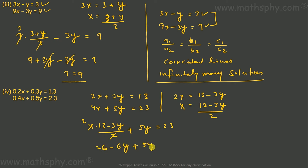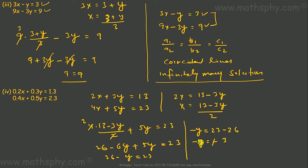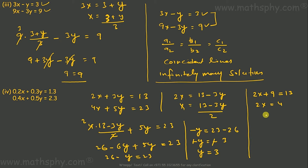Substituting: 4 times (13 minus 3y) over 2 plus 5y equals 23, giving 26 minus 6y plus 5y equals 23, so 26 minus y equals 23. Therefore negative y equals 23 minus 26, so negative y equals negative 3, and y equals 3. Now using the first equation with y equals 3: 2x plus 3 times 3 equals 13, so 2x plus 9 equals 13, giving 2x equals 4, so x equals 2. The answer is x equals 2, y equals 3.